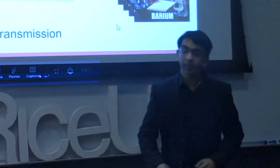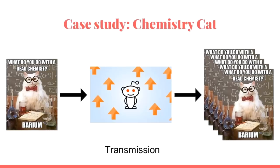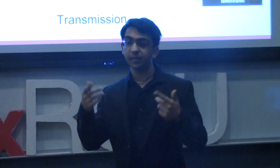The next step in the meme life cycle is transmission: when the meme gets on some kind of social networking site, or maybe just through word of mouth, and spreads itself — making many, many copies of itself as people look at the meme, think about the meme, and suddenly the meme is in their brain. They're thinking about it and they can spread it to other people.